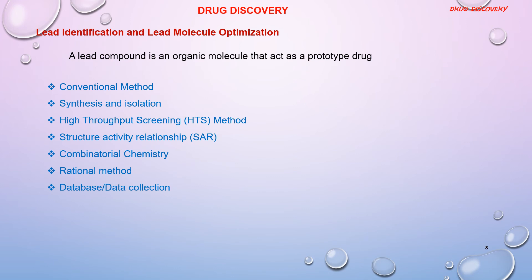After the drug target is identified and validated, a search for candidate molecules that can bind to the target site is initiated. The lead compound is a prototype drug which would require optimization. Traditionally, lead identification was done by trial and error, including random screening of compounds or by serendipitous methods. Other methods involve synthesis and isolation of the molecule, high-throughput screening or HTS, structure-activity relationship by combinatorial chemistry, rational methods, and database or data collection.